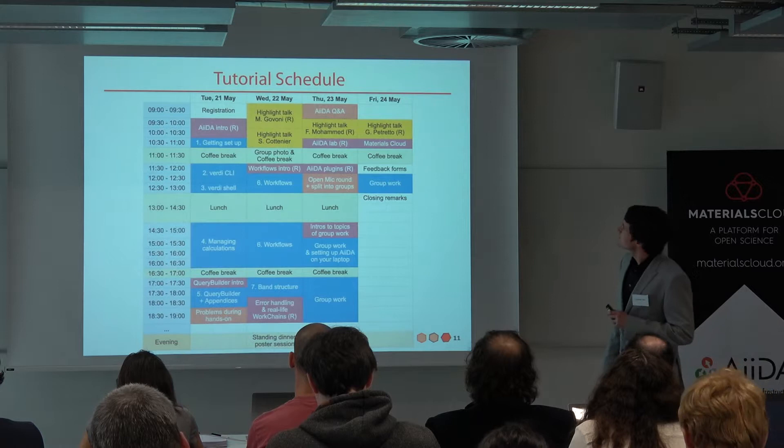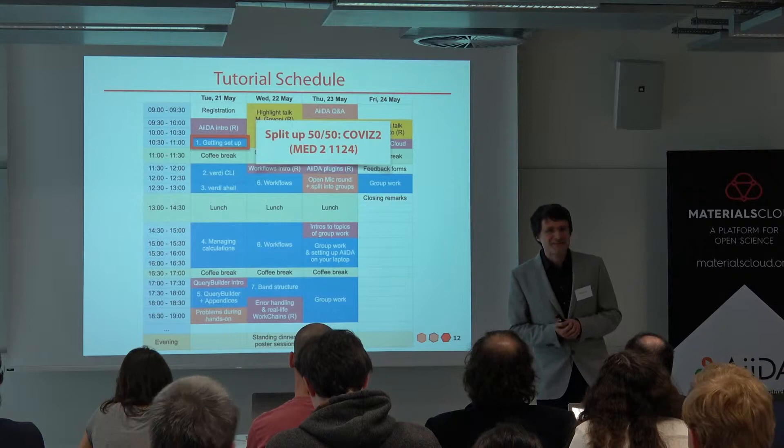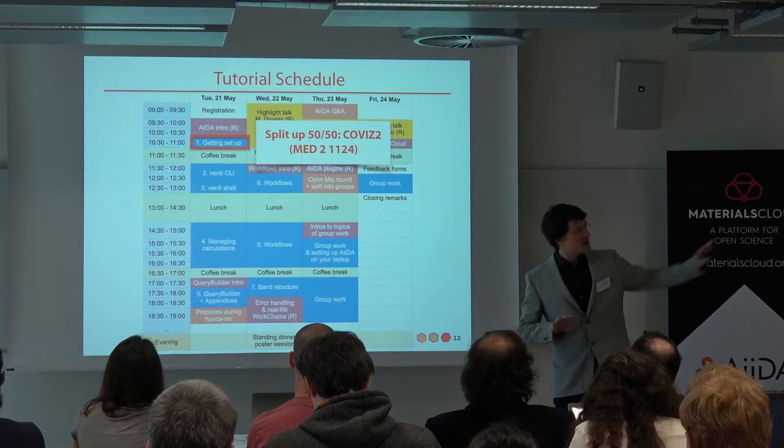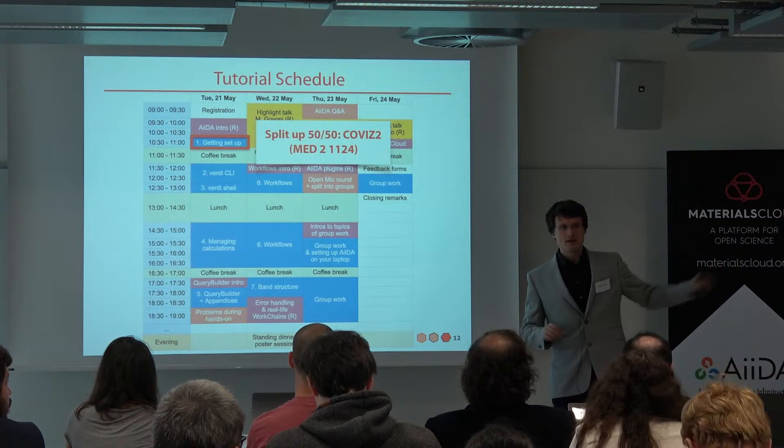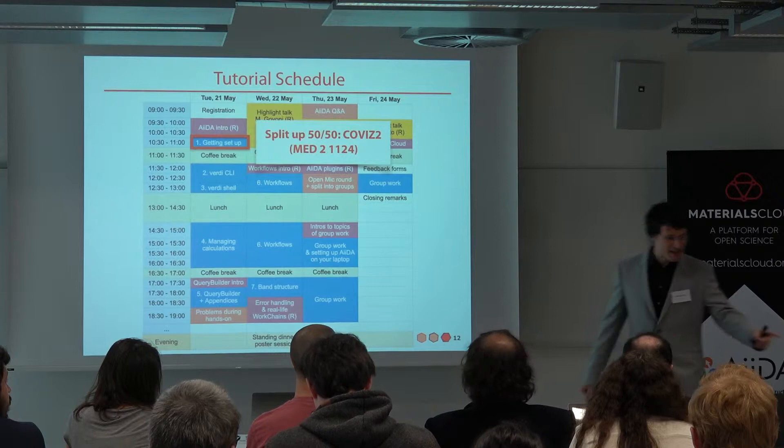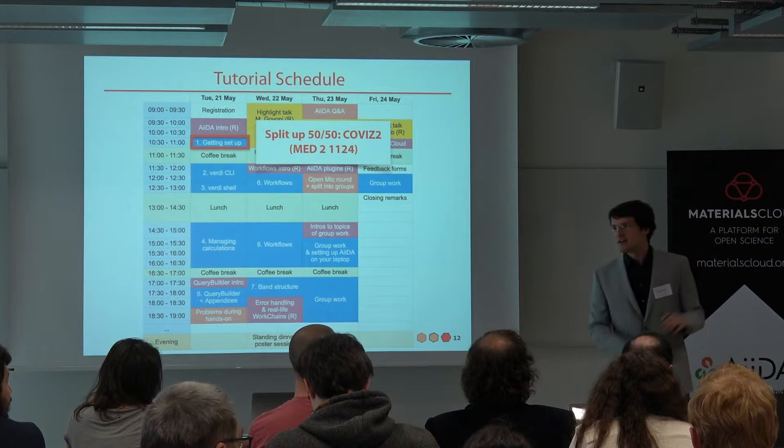This brings me to the schedule. Just a few things — it's getting quite cozy in here. After this, we will split up into this room and the other room, so half of you will stay here and half of you will go there. To make it easy, the left person at each table goes to the left room and the right person stays here. Of course, if you have preferences, just organize amongst yourselves. We should have more or less half-half in the two rooms.